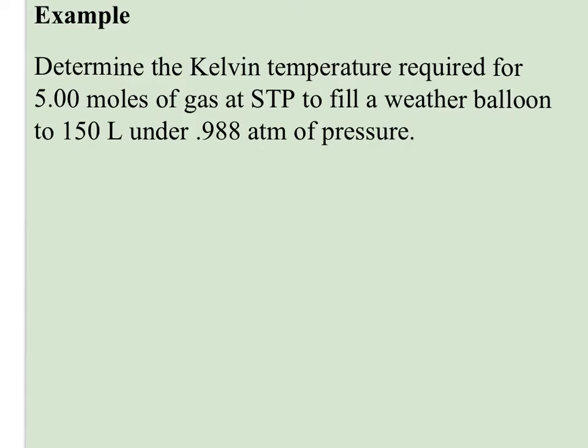So let's look at an example. Determine the Kelvin temperature required for 5.00 moles of gas at STP to fill a weather balloon to 150 L under 0.988 atm of pressure. So it's at STP, which really doesn't matter because these are the conditions we want. We want this volume, and we want this pressure. So 5 moles, PV equals nRT.